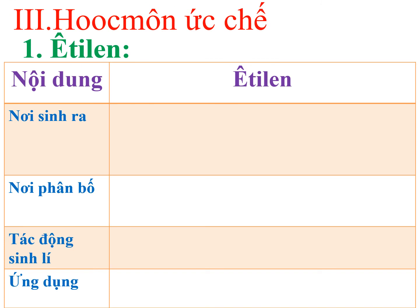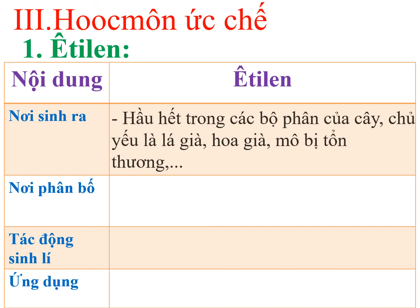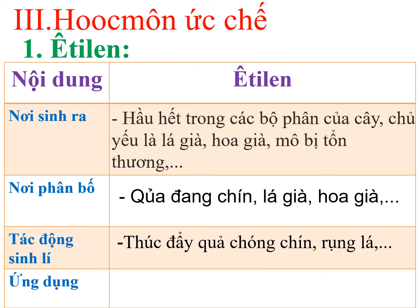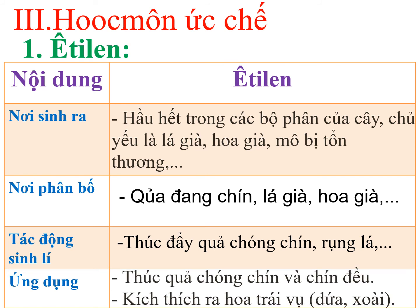Đối với hormone ức chế là ethylene, các em cần lưu ý: thứ nhất - nơi sinh ra: ethylene được sinh ra hầu hết trong các bộ phận của cây, chủ yếu là lá già, hoa già hay mô bị tổn thương. Nơi phân bố ở quả đang chín sẽ làm quả chín; phân bố ở lá già gây ra hiện tượng rụng lá; hay phân bố ở hoa già gây ra hiện tượng rụng hoa. Tác động sinh lý: thúc quả mau chín, rụng lá, rụng hoa. Ứng dụng trong đời sống: sử dụng ethylene để thúc quả mau chín và làm quả chín đều; đồng thời kích thích sự ra hoa trái vụ ở một số loài như dứa hay xoài.